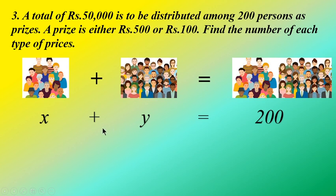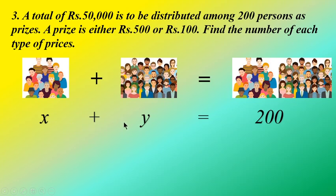So let us frame the equation. We have two sets of people. Since the number of persons of both types are unknown, we will assign them as x and y, and it is given that the sum of the people is equal to 200.